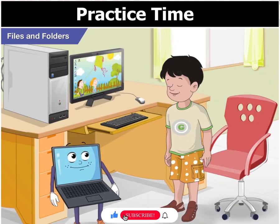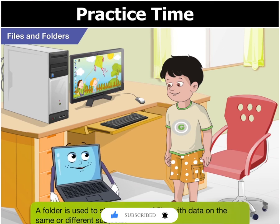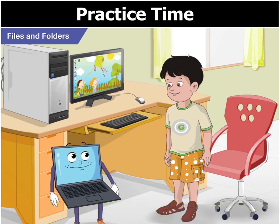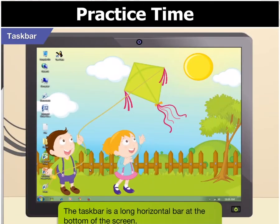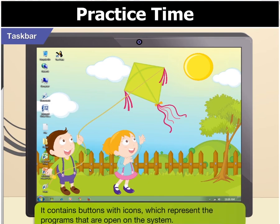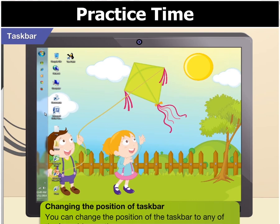Okay, and what's a folder? A folder is used to store a group of files with data on the same or different subjects. What is that long bar at the bottom of the screen, Toggle? It contains buttons with icons which represent the programs that are open on the system. You can change the position of the taskbar to any of the four sides on the screen.